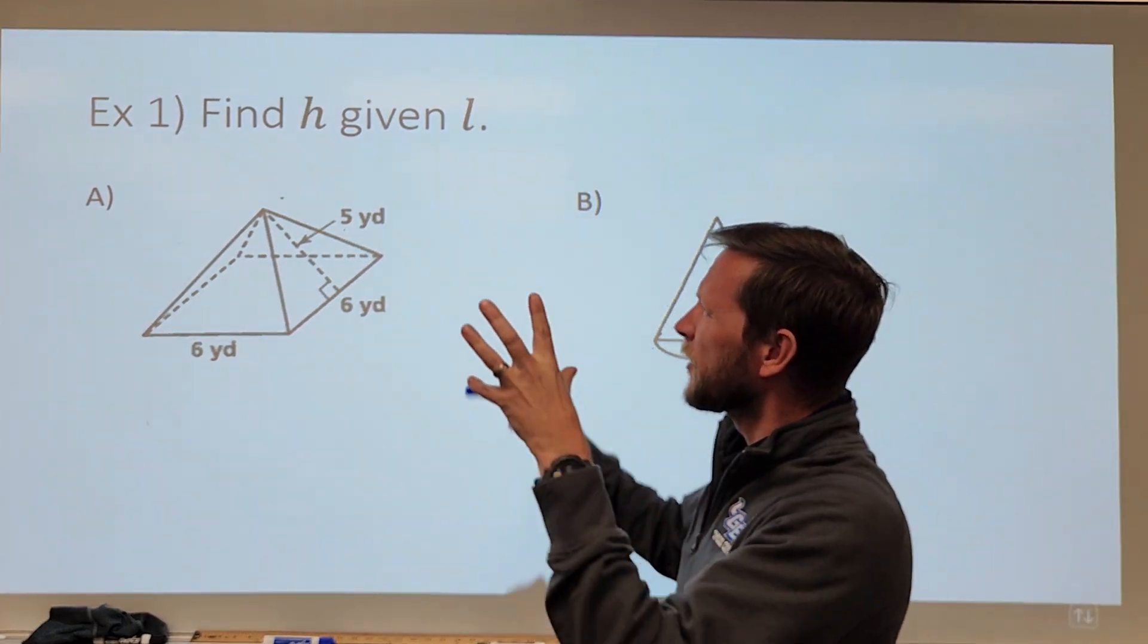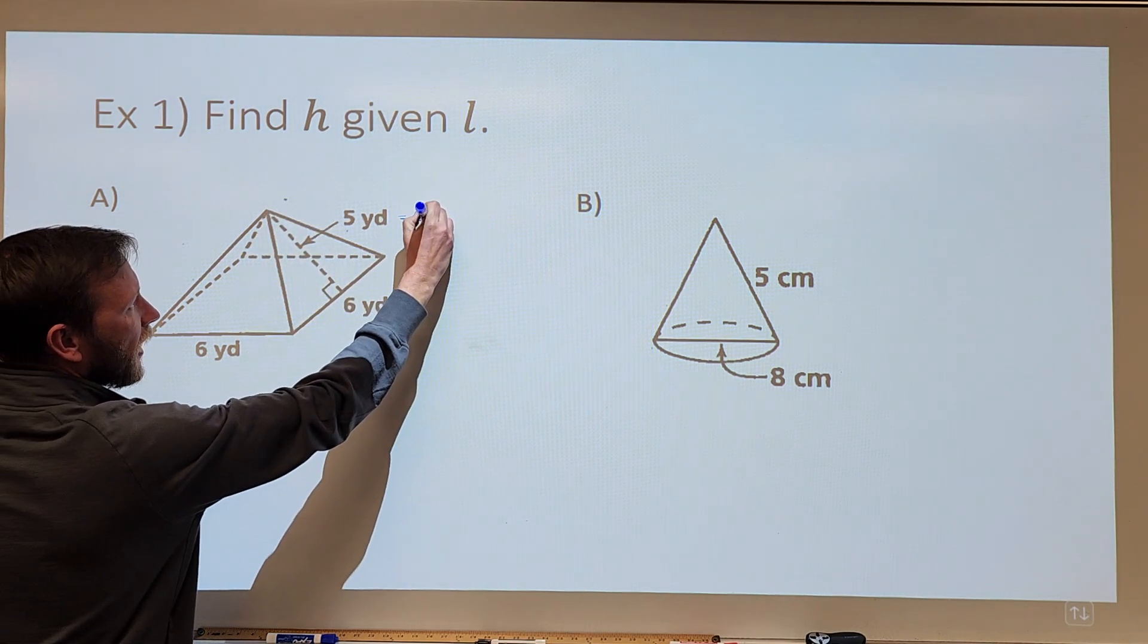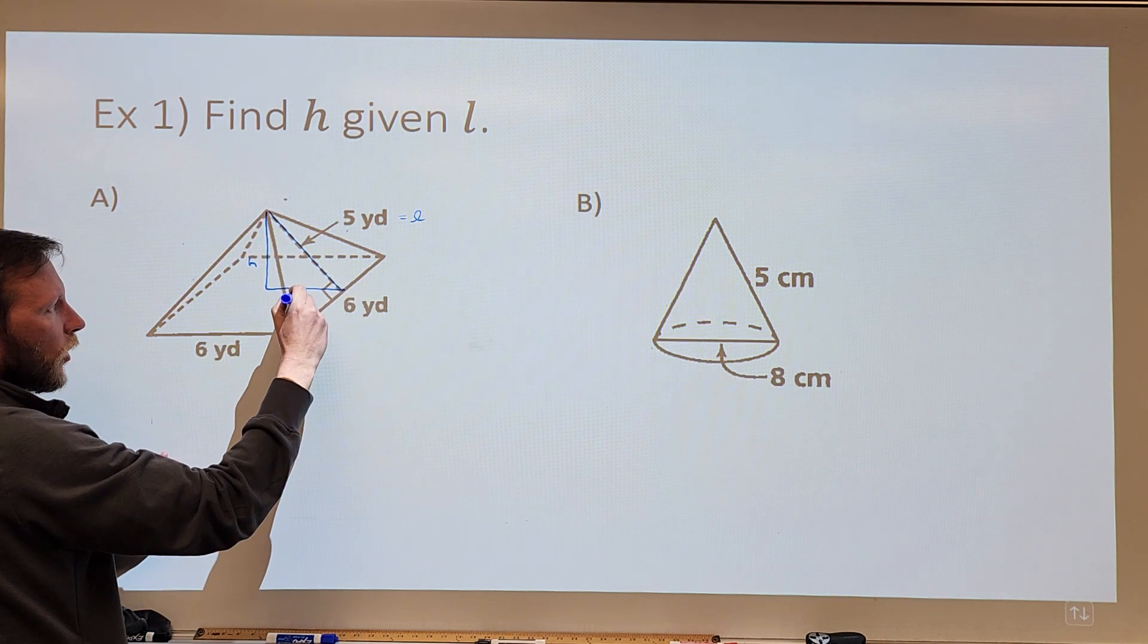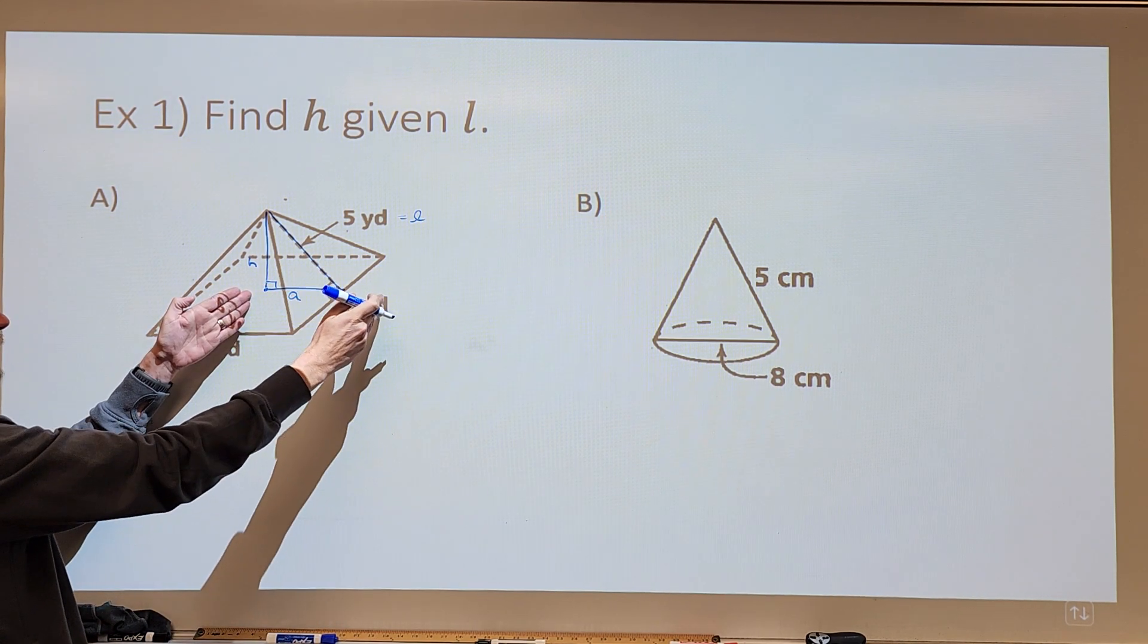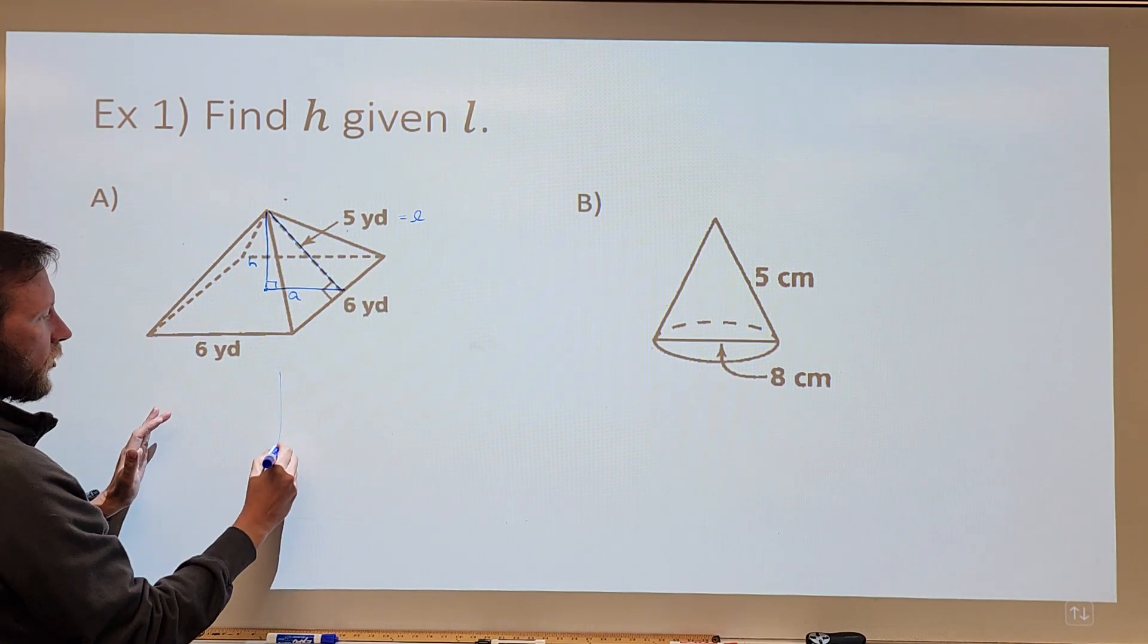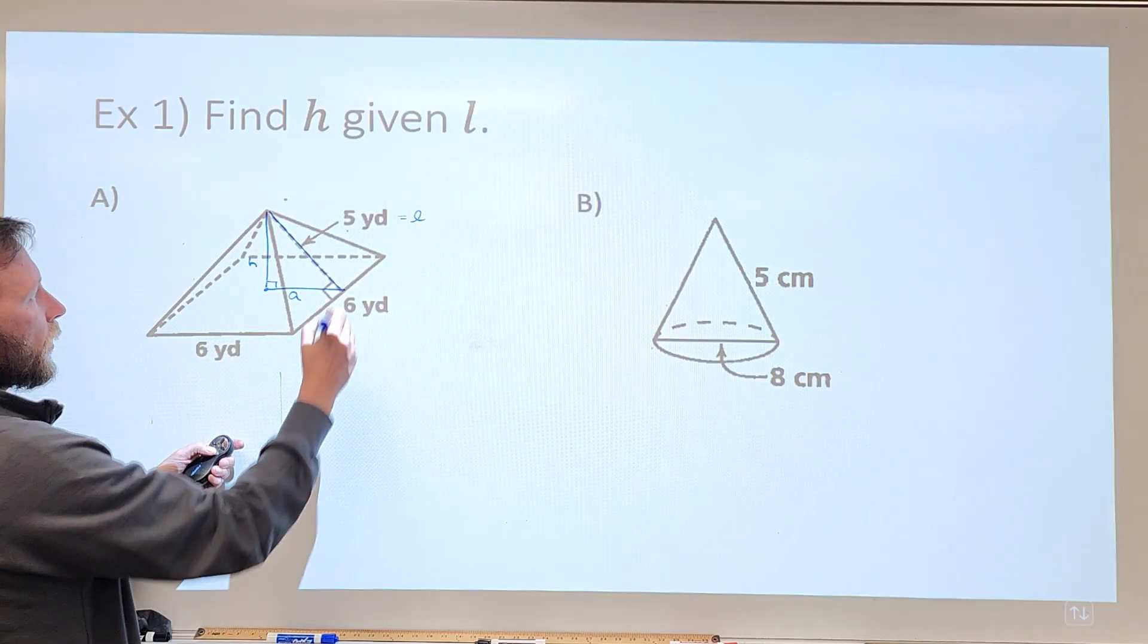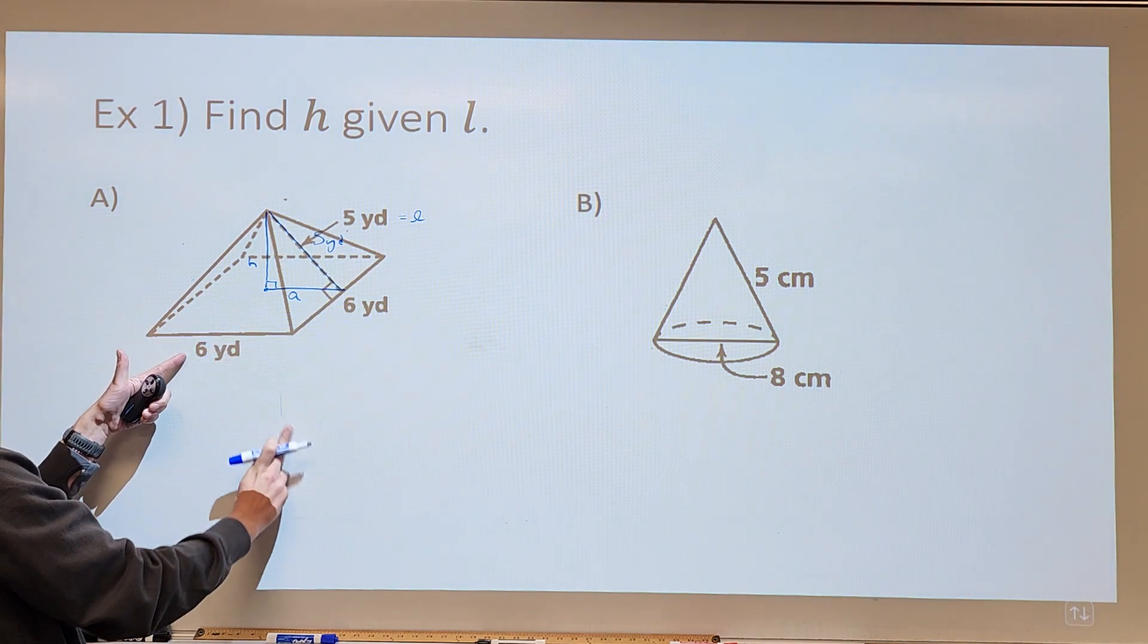So, let's find this connection between the slant height and the height. So again, this will be L. Five yards, in this case, will be the slant height. And this would make a triangle with the height, a right triangle in particular, and what I would call the apothem here, right? The apothem we know is that distance from the center to the midpoint of one of the edges, one of the sides. And so, here we have this triangle.